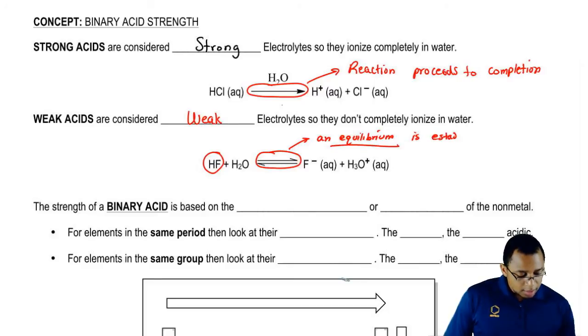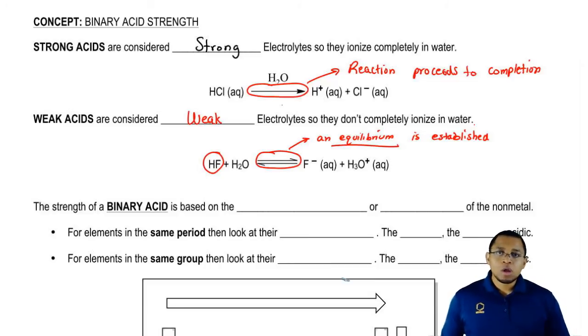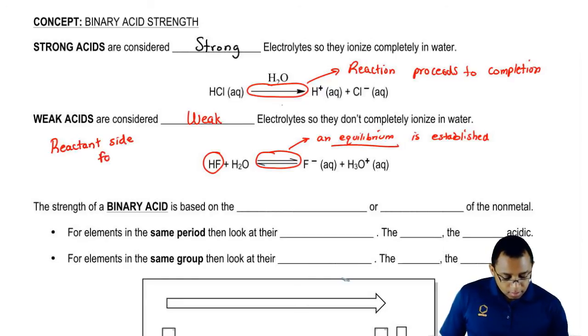And just realize here, when we're talking about equilibrium, that means the rate of my forward and my reverse reaction are equal. So reactants are breaking down to give me products but products are basically going in reverse to reform those reactants. Here we're going to say weak acids, weak bases, equilibrium is established. But it's the reactant side that's favored. So that means a majority of our compound will not break down to give us products. It's going to be mostly reactants.